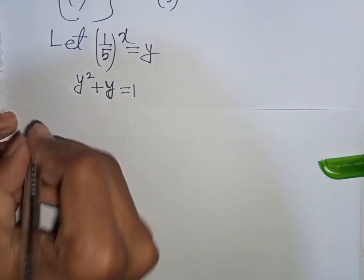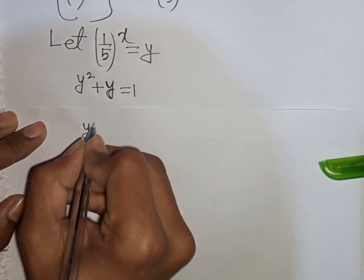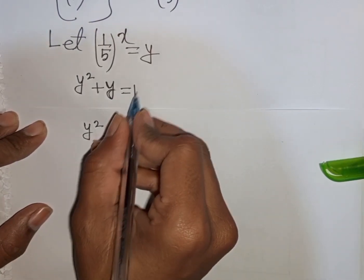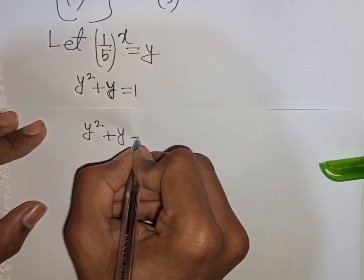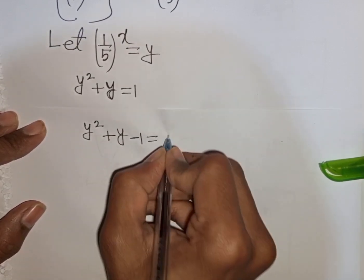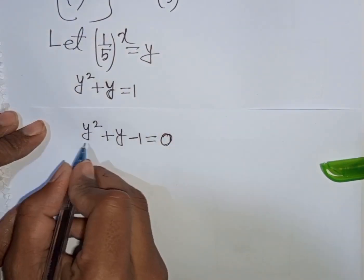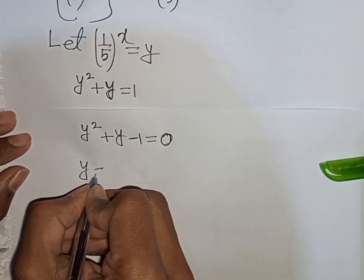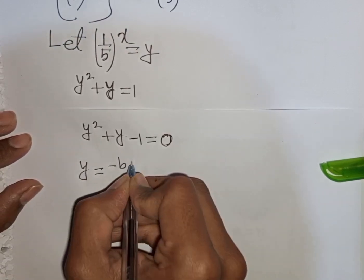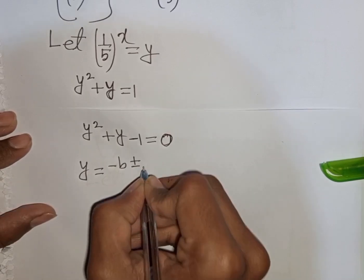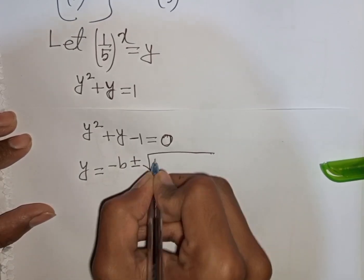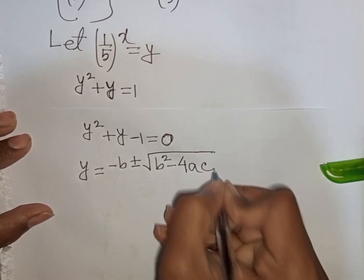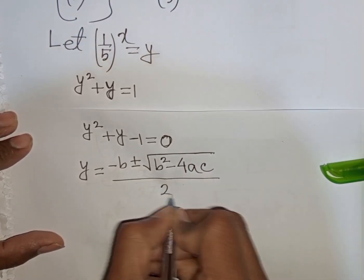Rearranging, y^2 + y - 1 = 0. We apply the quadratic formula: y = (-b ± √(b^2 - 4ac)) / (2a).